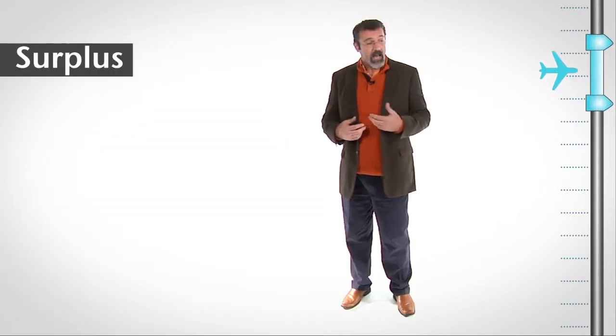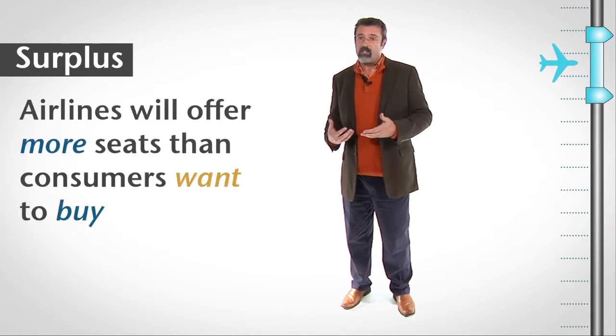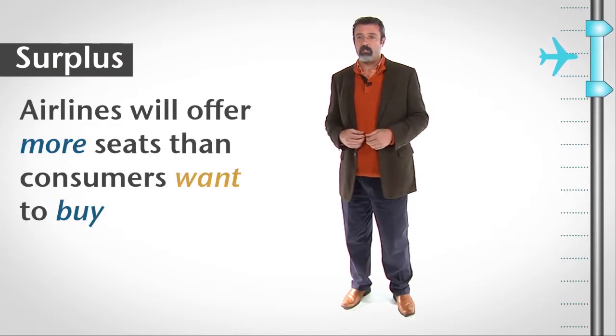Imagine that the price of airline tickets is very high. With a high price, airlines will want to offer many flights, but consumers will not want to buy many seats. We have what is called a surplus. Airlines will offer more seats than consumers want to buy.